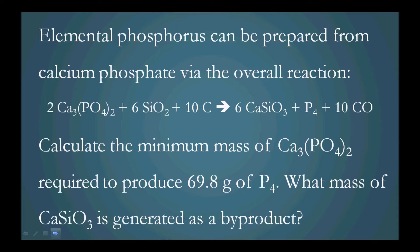2 Ca3(PO4)2 plus 6 SiO2 plus 10 C yields 6 CaSiO3 plus P4 plus 10 CO.